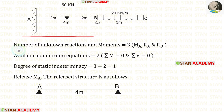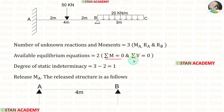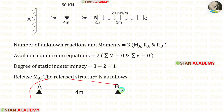In this beam, the number of unknown reactions and moments are 3: MA, RA, and RB. The available equilibrium equations are 2: sigma M = 0 and sigma V = 0. The degree of static indeterminacy is 3 minus 2, which equals 1. So let us release MA. This is our released structure.